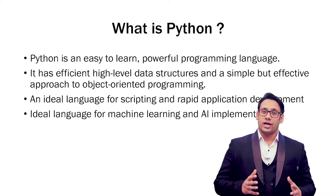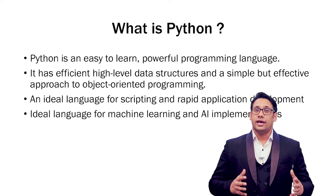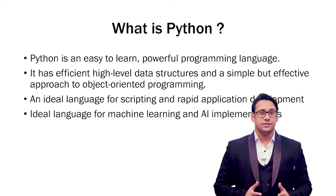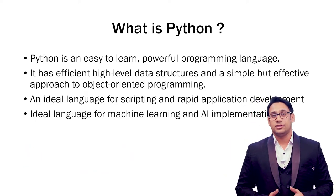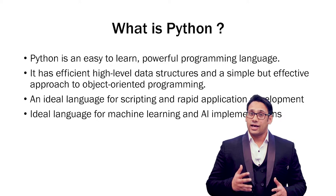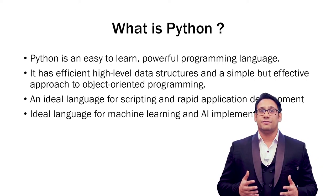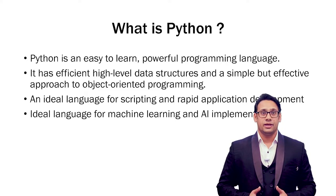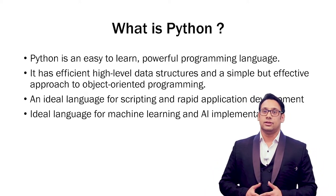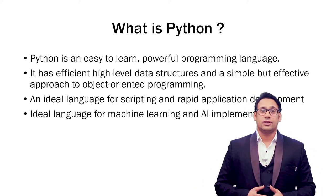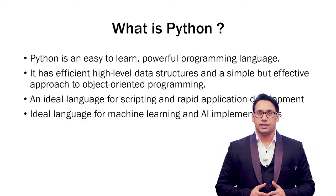So what is Python? Python is a very easy-to-learn, powerful programming language. It is one of the easiest programming languages you can ever come across — much easier compared to C and C++. It has very efficient high-level data structures and a very simple but effective approach to object-oriented programming. It is one of the ideal languages for scripting and rapid application development, also called RAD, and it is the ideal language for machine learning and AI implementation.